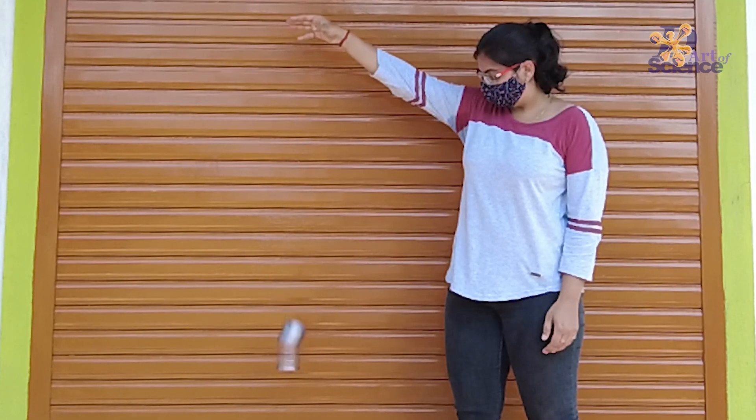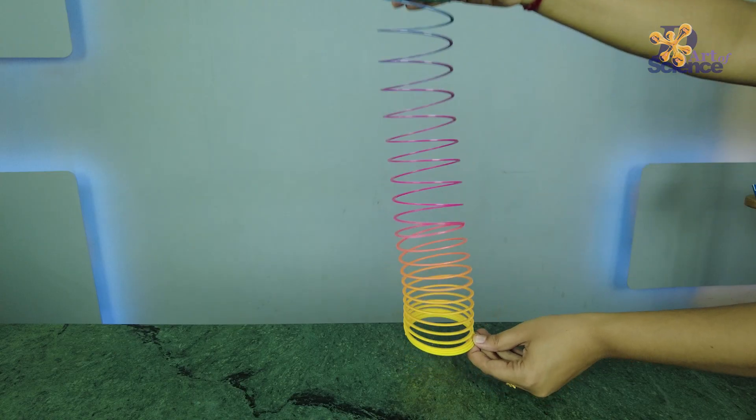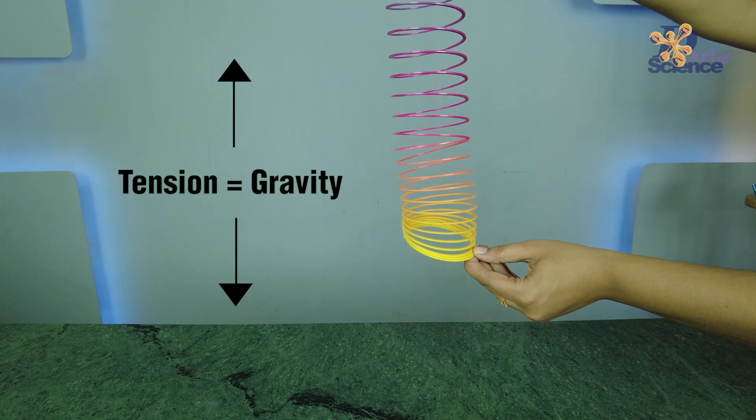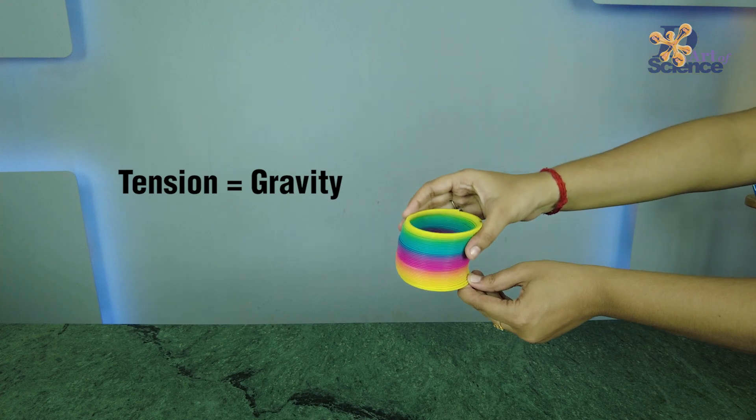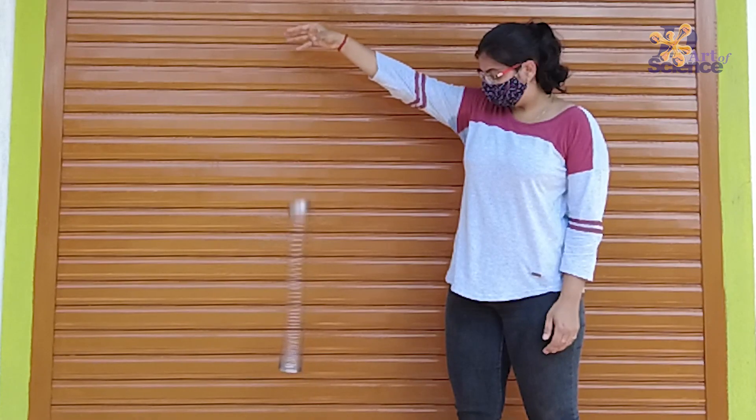And this is why the bottom of the slinky stays in almost the same position till the pressure wave from the top catches onto it.